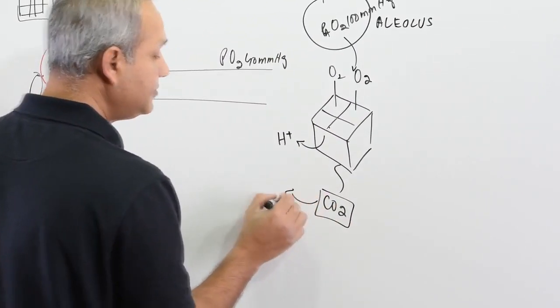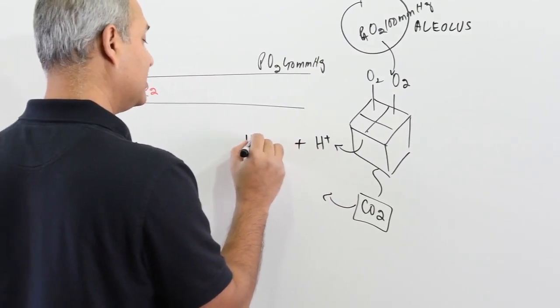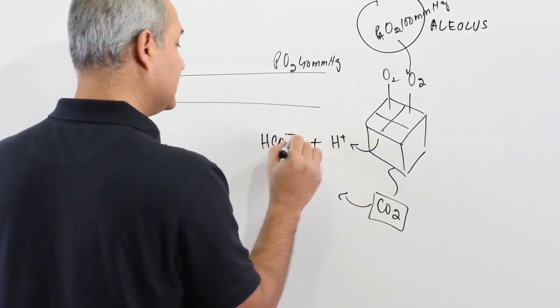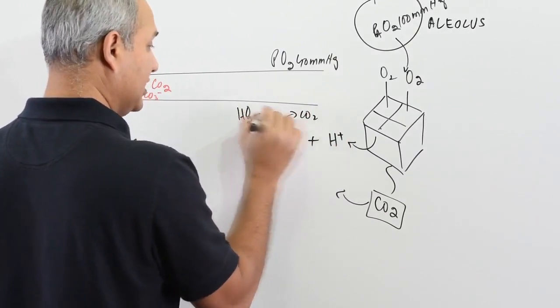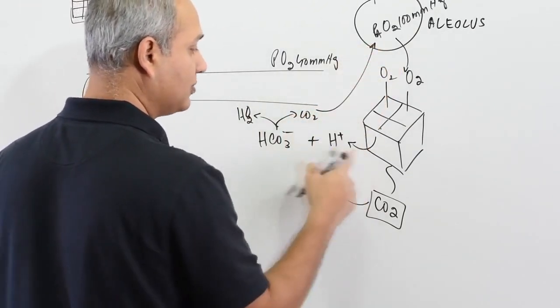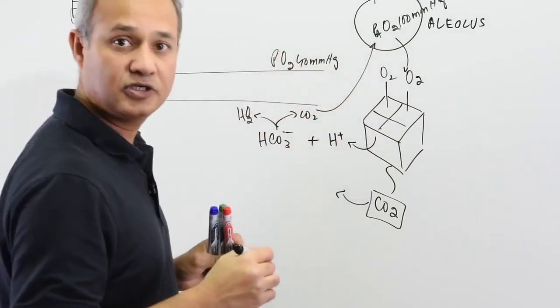How does that happen? Remember, hydrogen would combine with HCO3-. That would give carbon dioxide plus water. This carbon dioxide will be going out. So one proton release has caused a carbon dioxide to be removed.